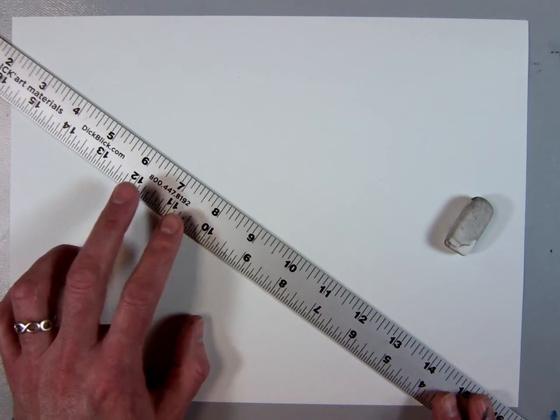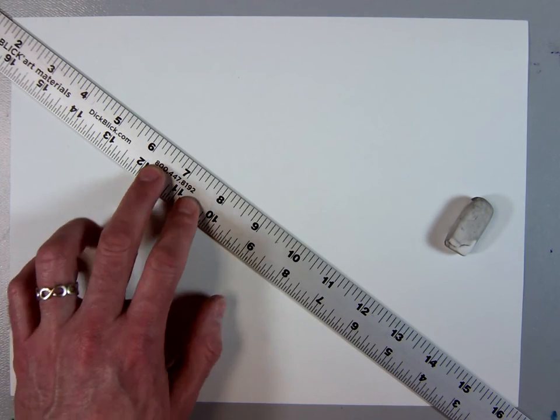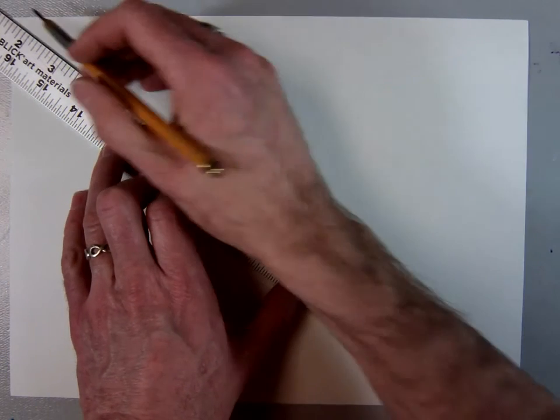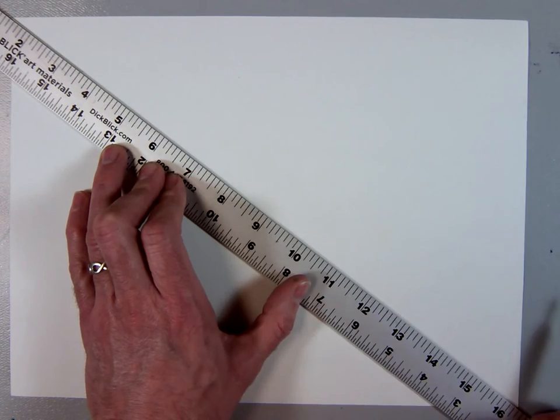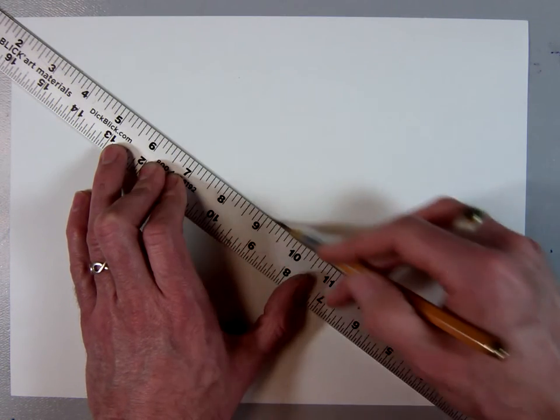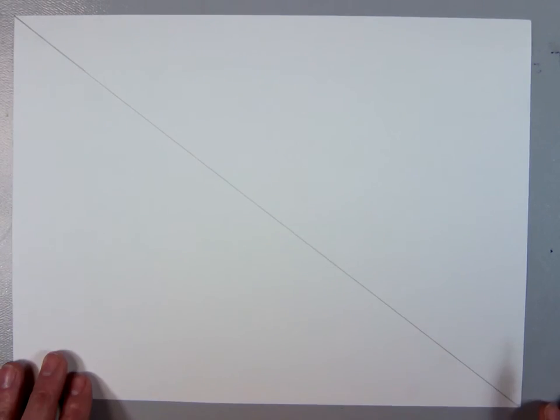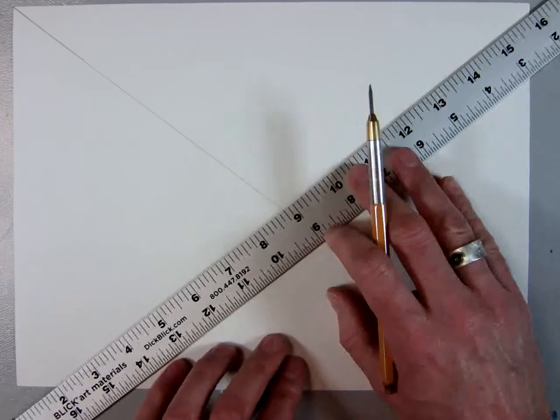you're going to take your straight edge and line up both corners of your paper, and then just draw yourself a nice light line. You can make it dotted if you'd like. If you take two diagonal lines inside of a rectangle, you will find what's called the true center.